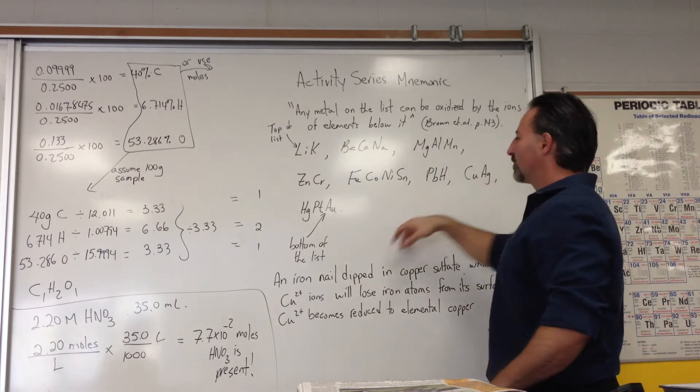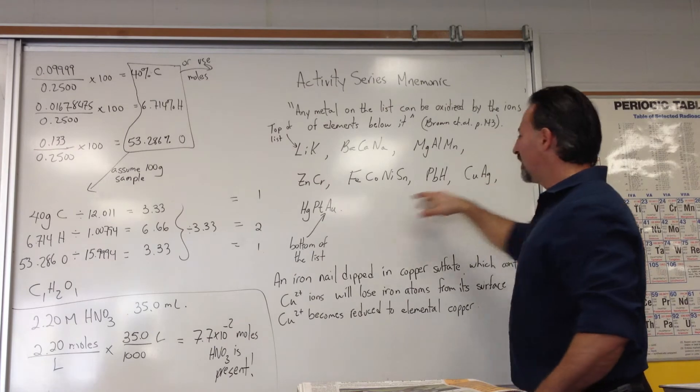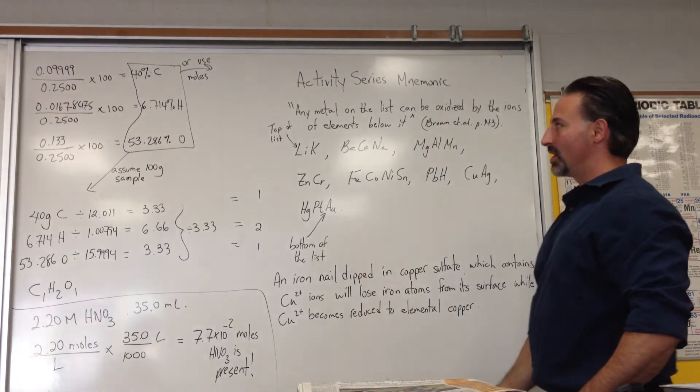Copper, silver, mercury, platinum, gold. So you see the elements that are involved in coinage have the lowest reactivity. They're at the very bottom of the list.